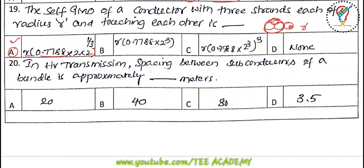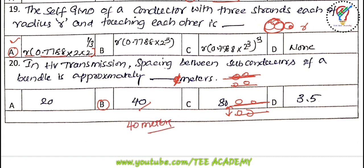Twentieth question: in a high-voltage transmission line above 220 kV, the spacing between the sub-conductors of a bundle conductor — the answer is 40 centimeters (not meters). So 40 centimeters is the spacing between sub-conductors of a bundle conductor.